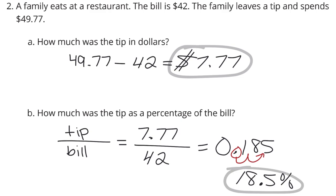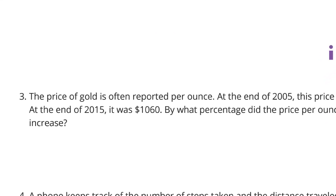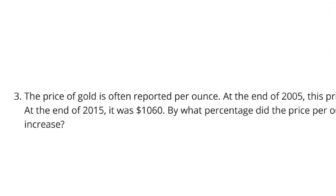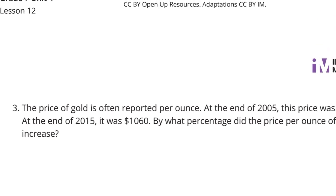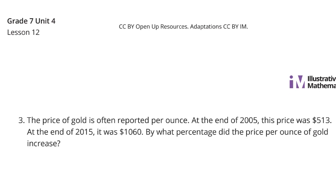Let's continue on to question three. The price of gold is often reported per ounce. At the end of 2005, this price was $513. At the end of 2015, it was $1,060. By what percentage did the price per pound of gold increase? To solve this question, what we need to find is the amount of increase, and we're going to divide that by the original 2005 price.